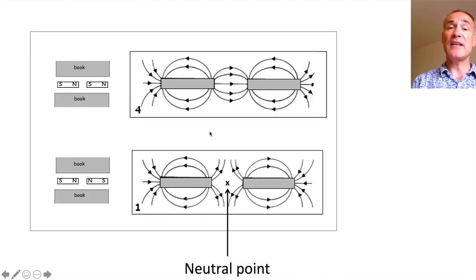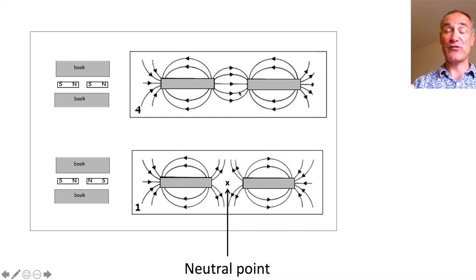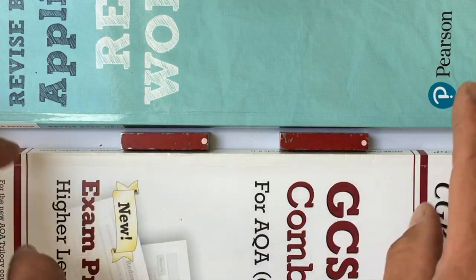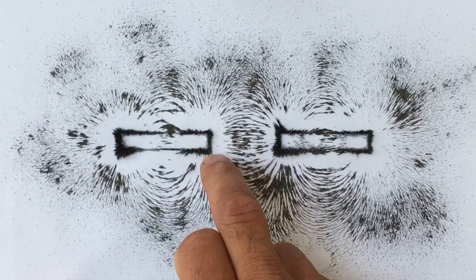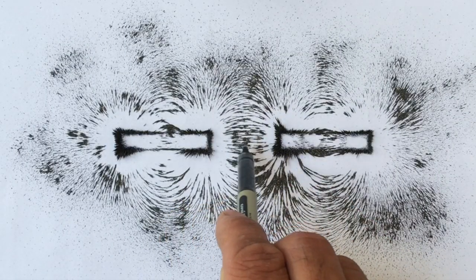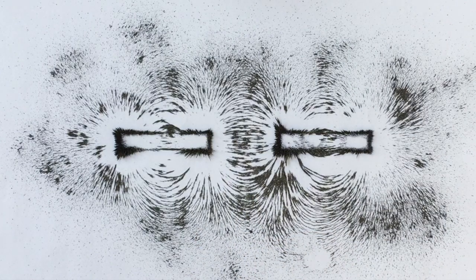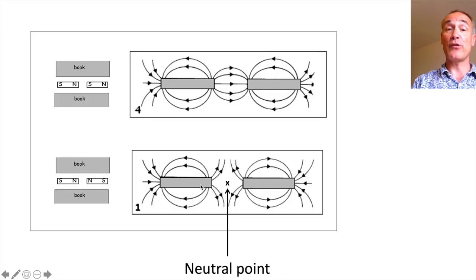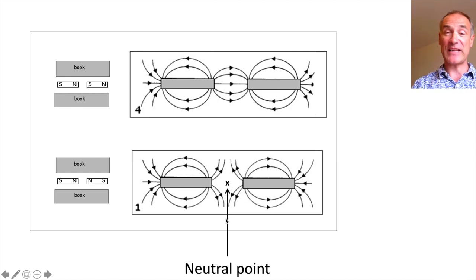That was showing the field pattern around one magnet. Now I want to show the field pattern with a north and a south pole attracting — you get a pattern where it looks like they're attracted together. I've got two magnets that are north and south so they attract, separating them slightly and re-plotting the field. You'll notice it's a strong field between the two. Secondly with a north and a north, they repel each other and we actually get a neutral point in the middle, with field lines that look like they're going to spring them apart.